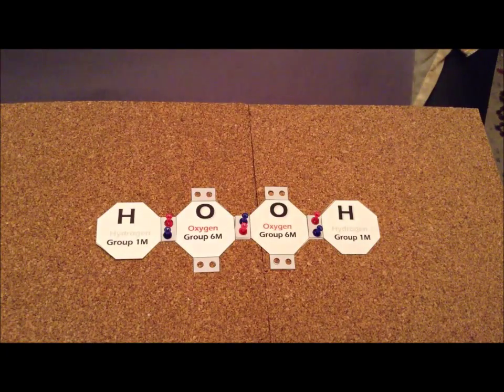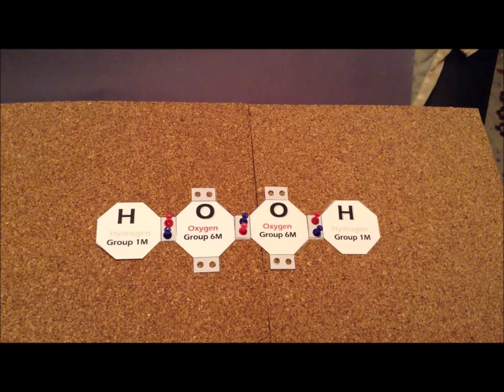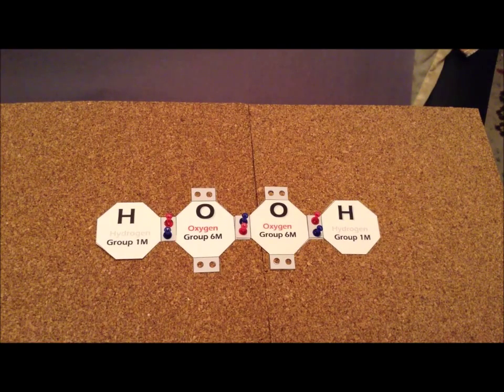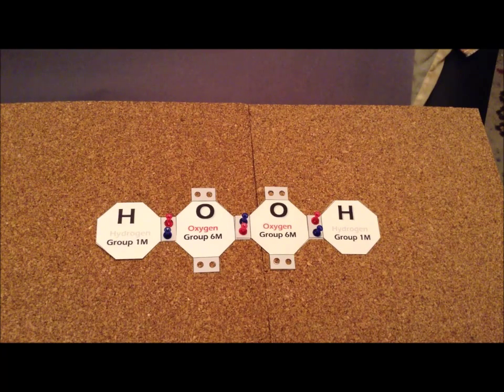So far we've been able to satisfy the duet rule for each of the hydrogens using six electrons. So we have eight more electrons that we have to allocate, so let's see if we can satisfy the octet rule for oxygen as well.